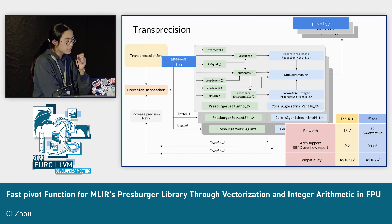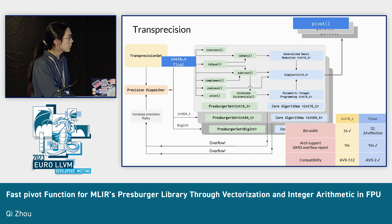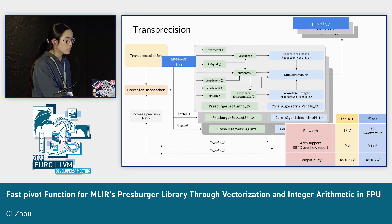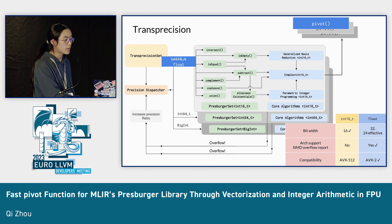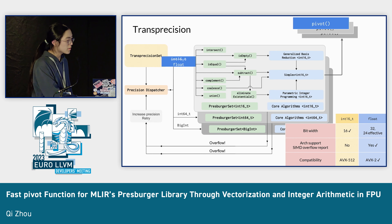Here I'm presenting an alternative approach using floating points rather than INT16, where a 32-bit floating point number provides 24 effective bits to do integer operations. The benefits are free overflow checking and much better hardware capability, as floating points only require AVX2 or even older AVX instruction sets. The cost is bit width — the bit width doubles, so there will be double the memory operations.